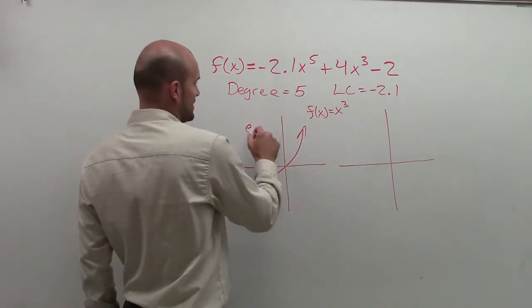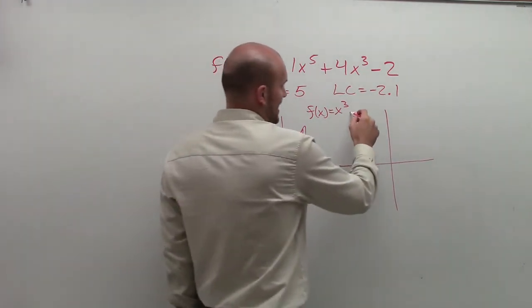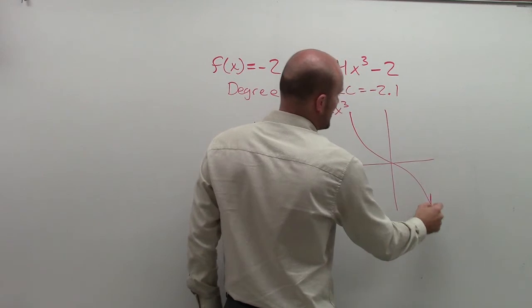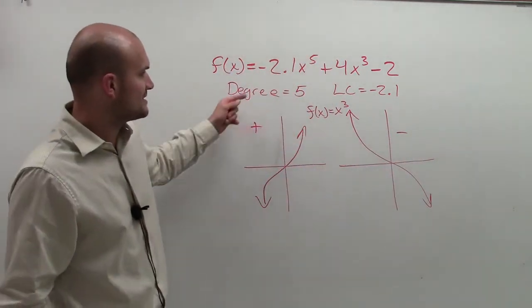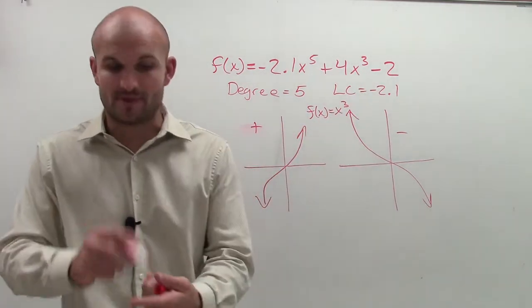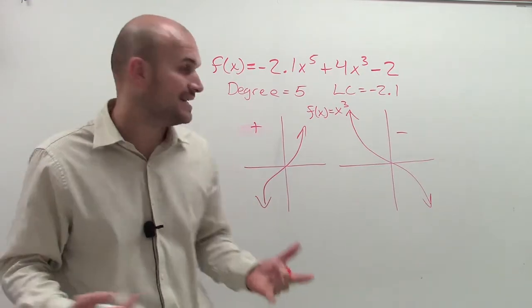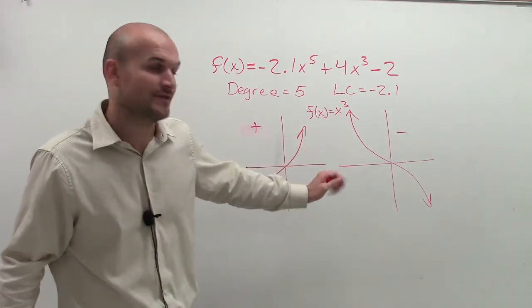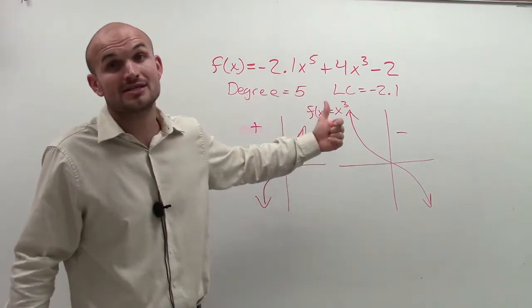So we look at this, and we know that these are both when you have an odd degree. It doesn't matter what the number is. It could be 3, it could be 9, it could be 21. As long as your degree is odd, you're going to have the same end behavior. But which one of these end behaviors all depends on if your leading coefficient is positive or negative. If it's positive, it's going to fall left, rise right. If it's negative, it rises left, falls right.